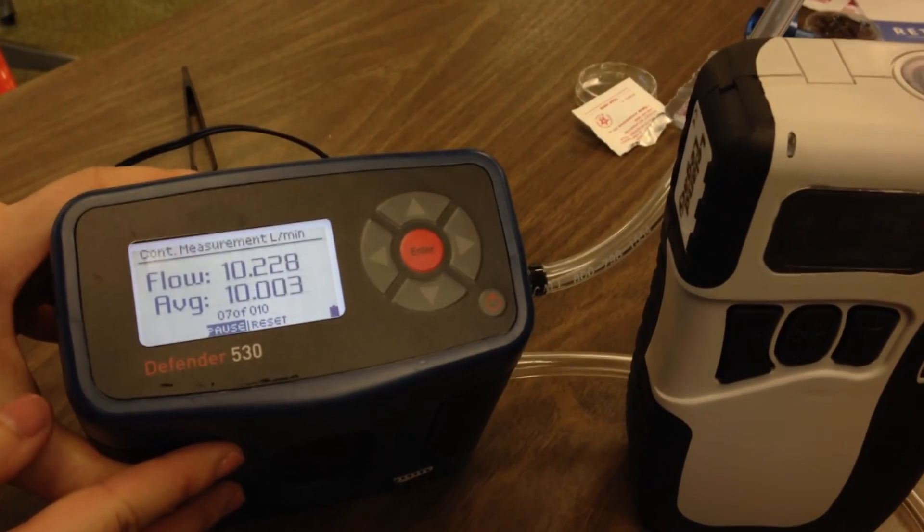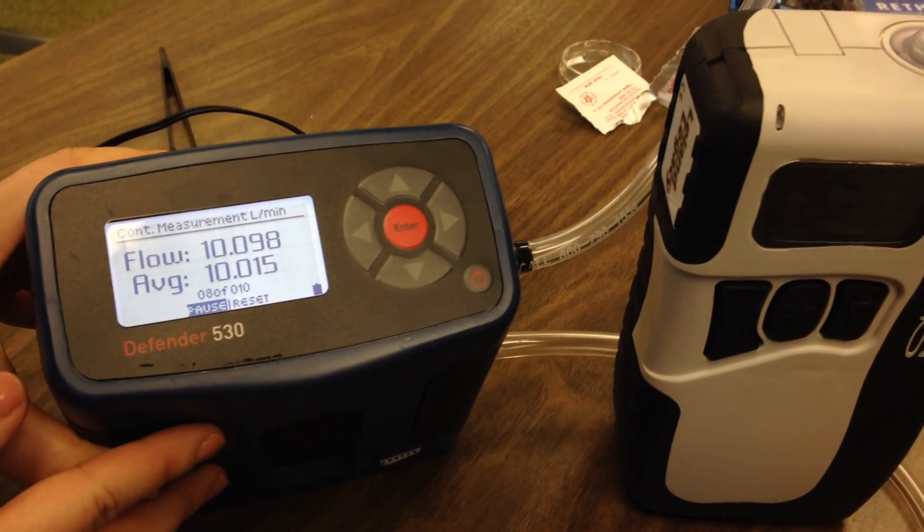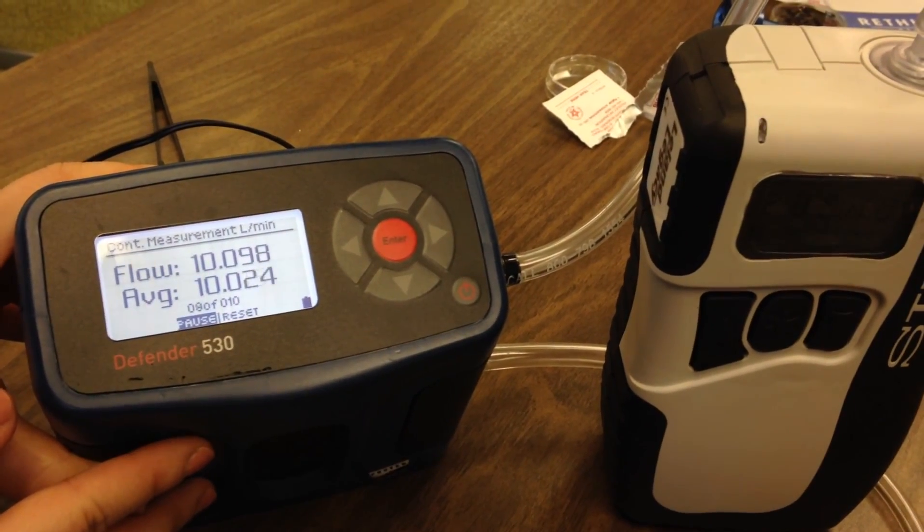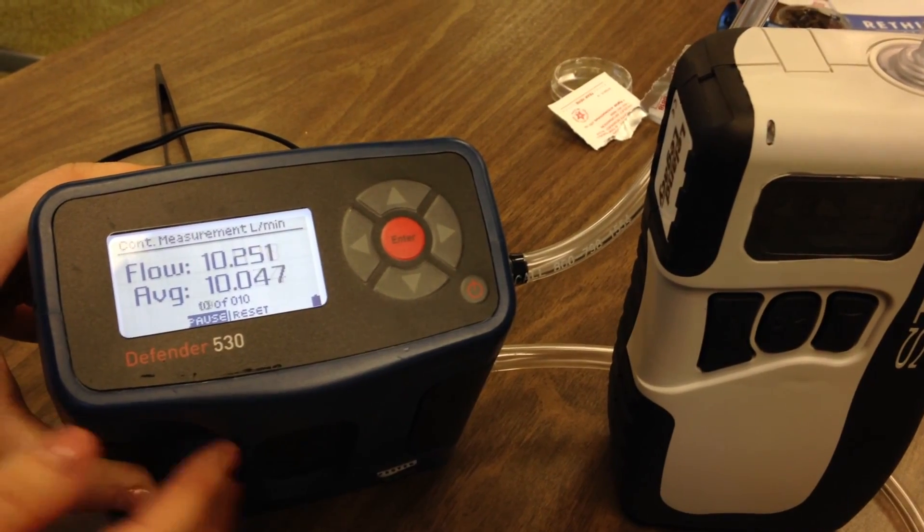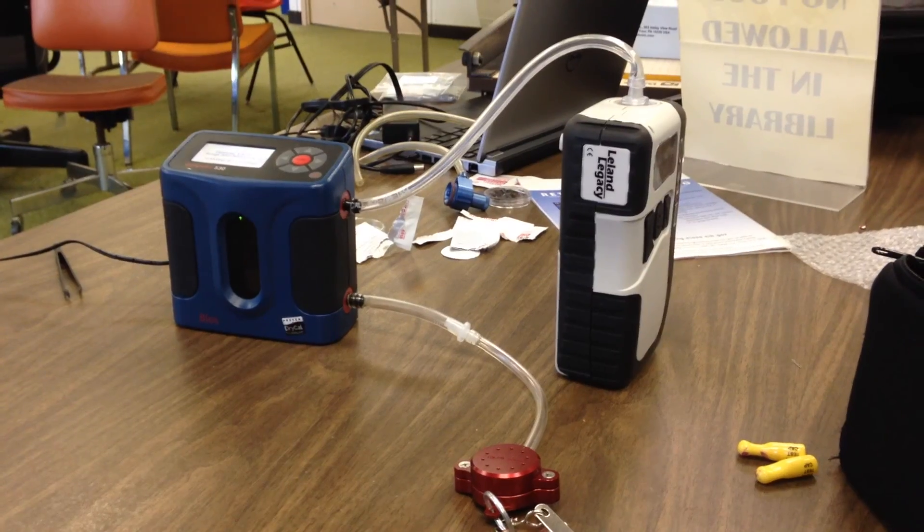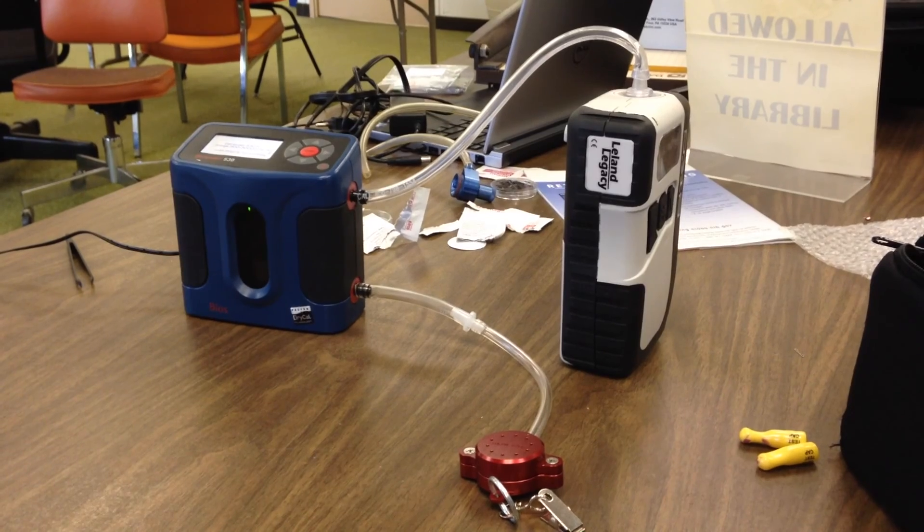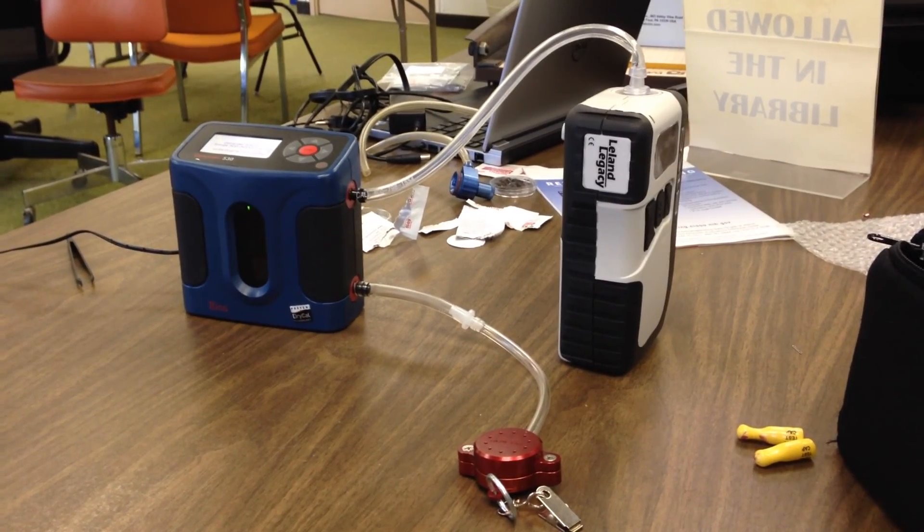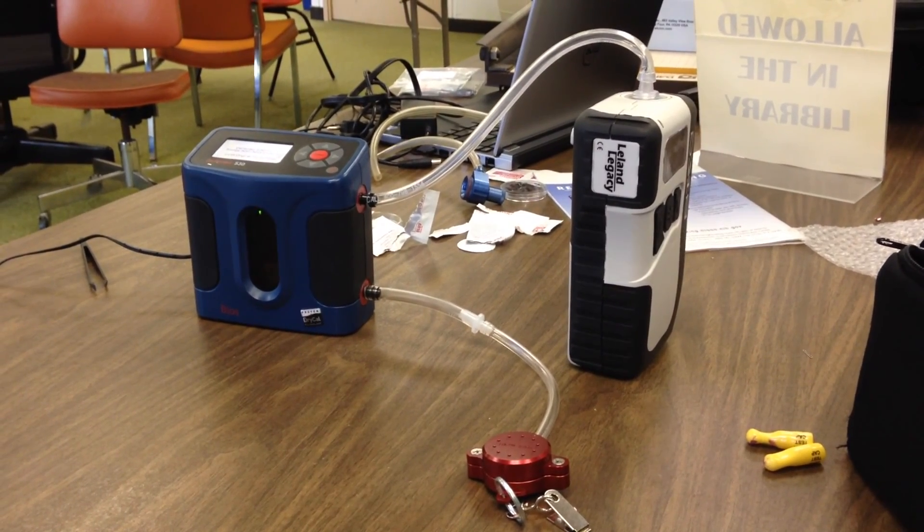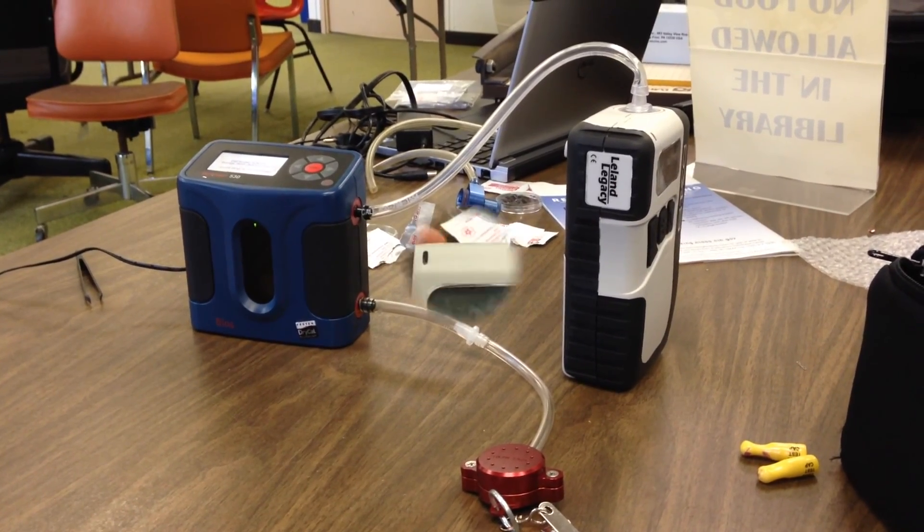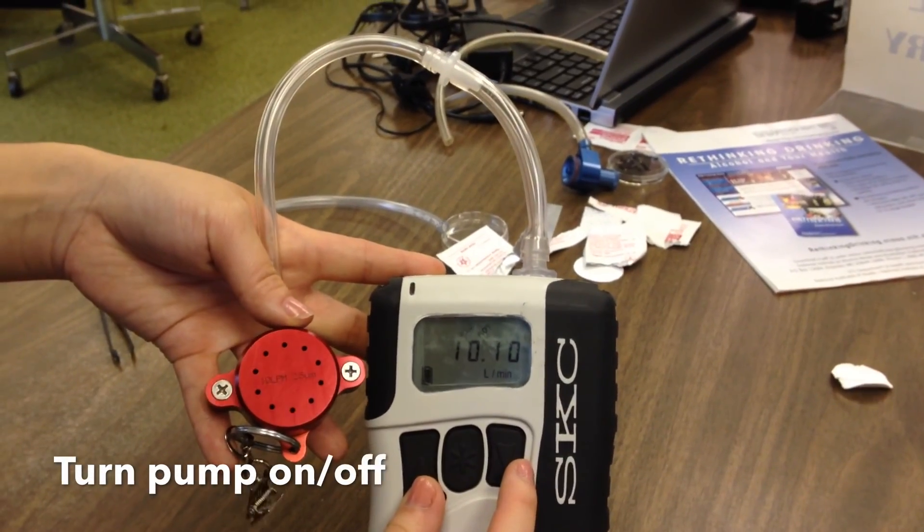The display should read 10 liters per minute. In order to adjust to your desired airflow, you can go to the setup option in the legacy pump and use the up and down arrows. Using a flow calibration cap, the PEM can also be connected in series like the XAD4 tube in between the calibrator and pump. Both calibrations will yield the same results.